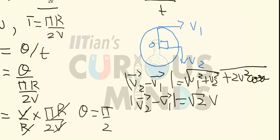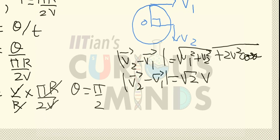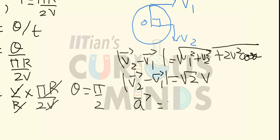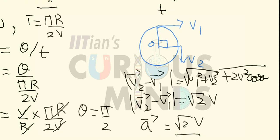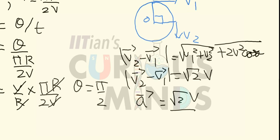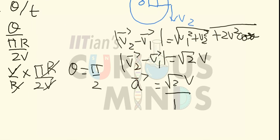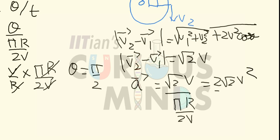The acceleration equals |v2 − v1| divided by time, which is √2·v divided by (πr/2v). This equals 2√2·v² divided by πr. This is the magnitude of the acceleration.